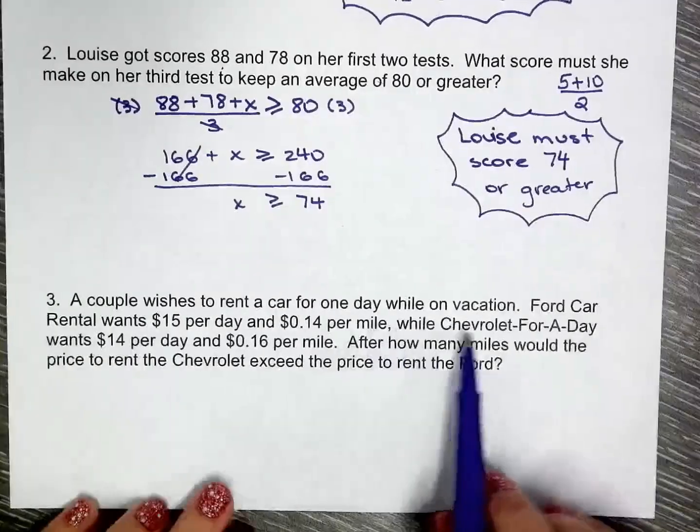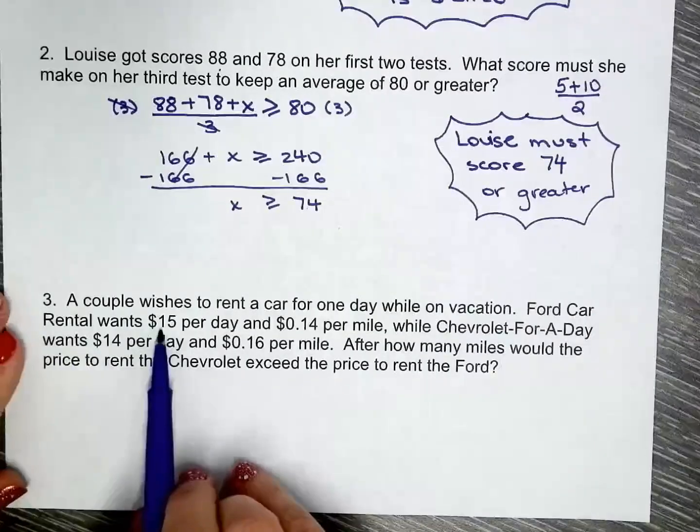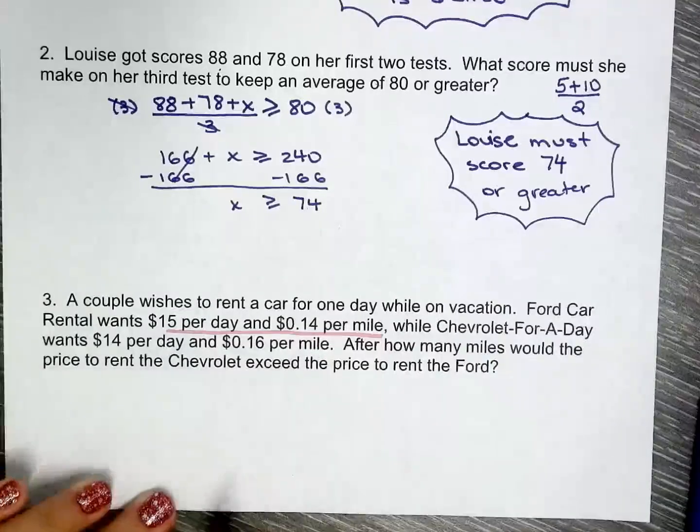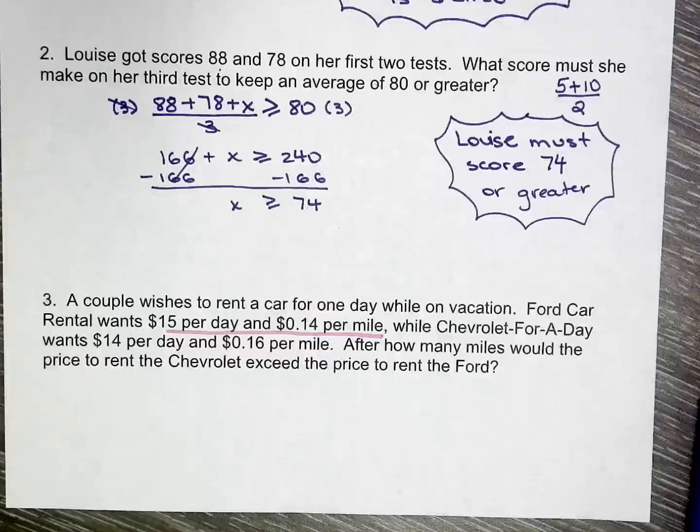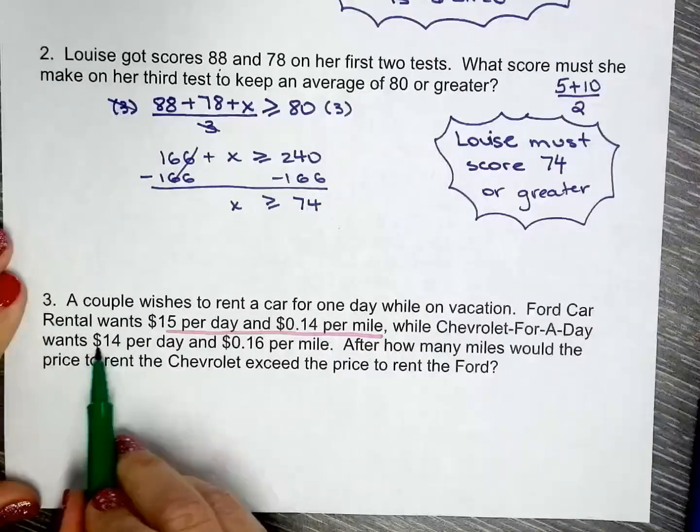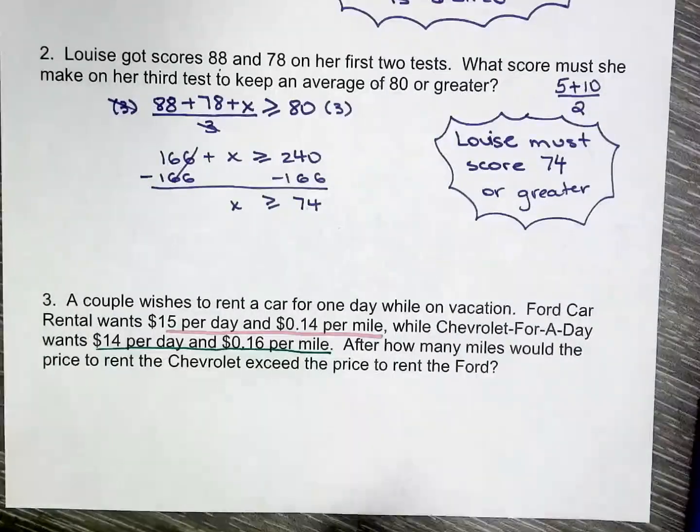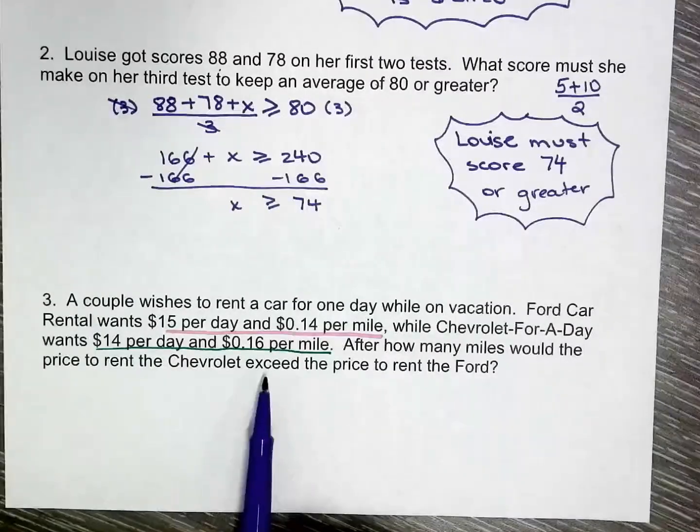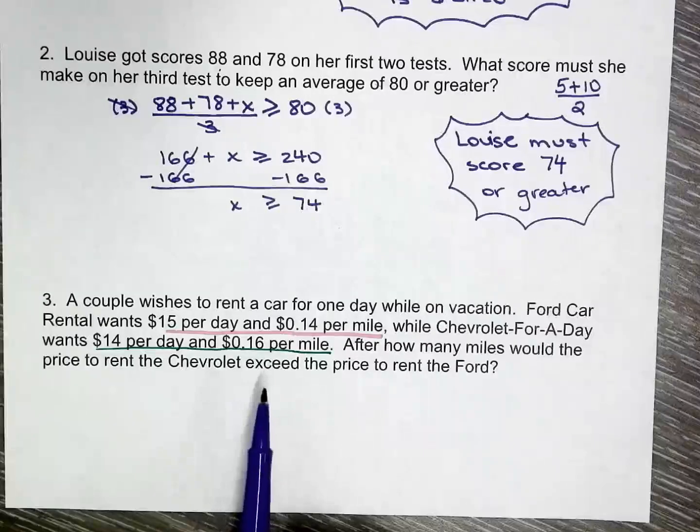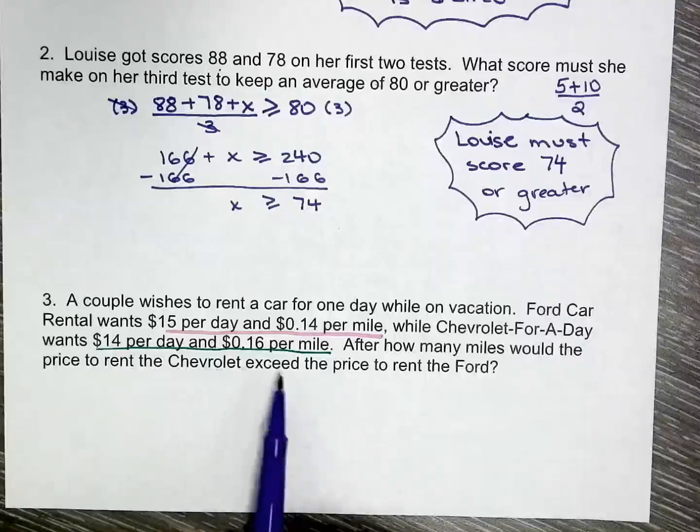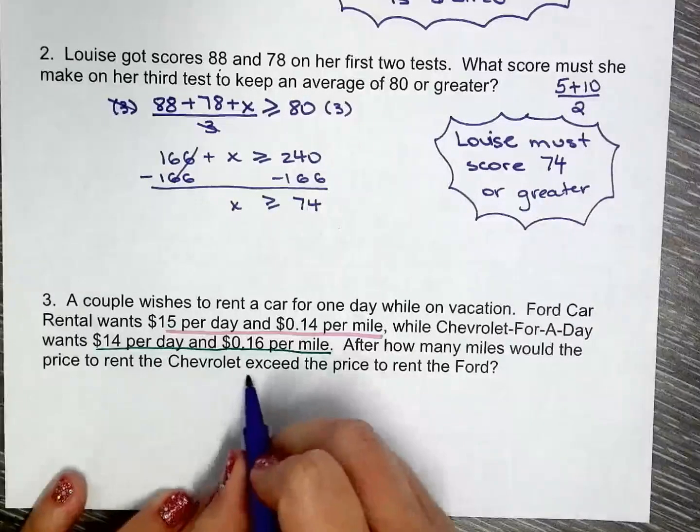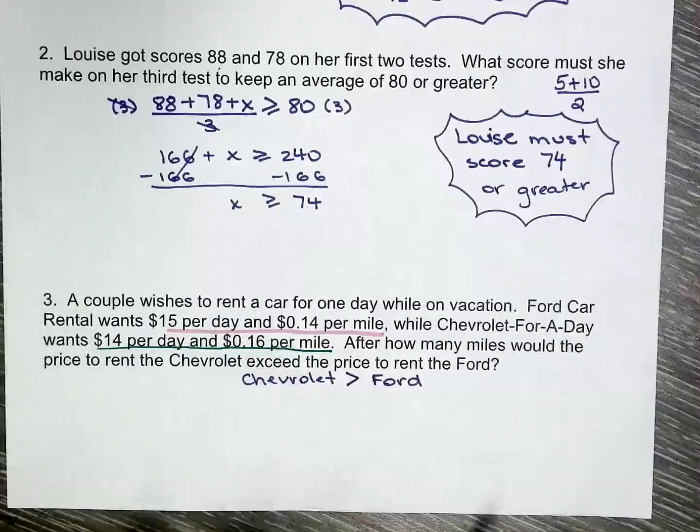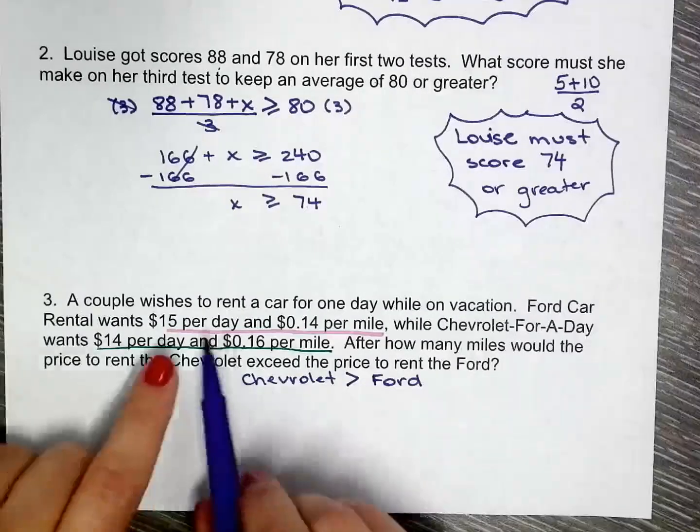A couple wishes to rent a car for one day while on vacation. Ford Car Rental wants $15 per day and $0.14 per mile, while Chevrolet-For-A-Day wants $14 per day and $0.16 per mile. After how many miles would the price to rent the Chevrolet exceed the price to rent the Ford? Exceed means at what point will Chevrolet be more expensive than the Ford? That's what the question is asking me to find.